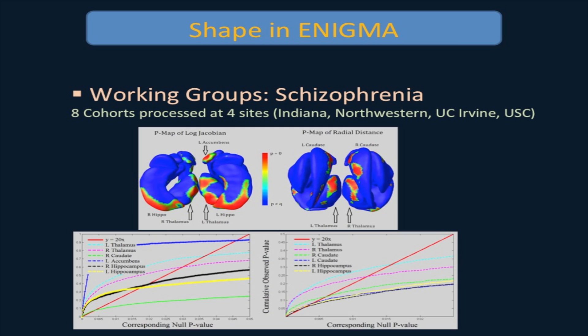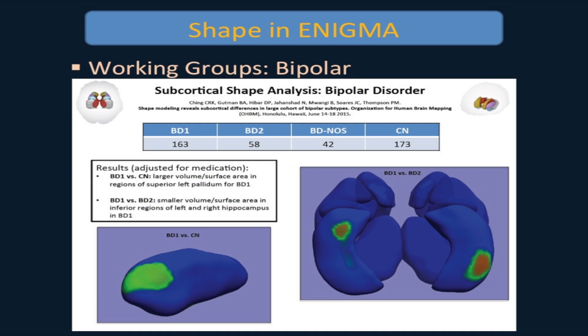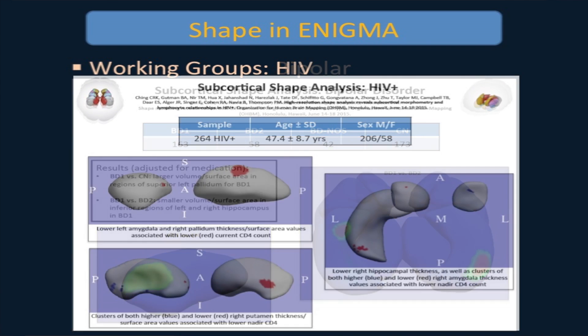In the schizophrenia study, we found some things just in two cohorts that could not be found in any one of them by themselves. Here are some examples of Chris Ching's work comparing types of bipolar — some of those results were not significant when just comparing volumes. Same with HIV.